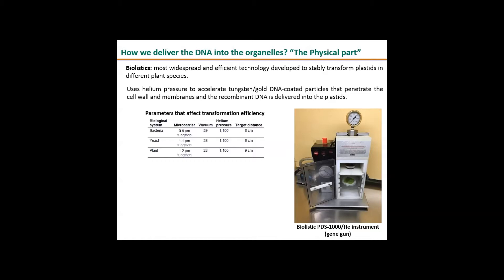In the picture there are different distances marked as A, B, and C. By changing those we can alter the efficiency. For what we do, the target distance, which is the distance between the stopping screen and the cell, is nine centimeters. The helium pressure we use in PSI is 1100, which can be altered by changing the rupture disks. By changing different rupture disks we can put higher or lower pressure. For the machine we're using, we're using those settings for plants. We're asking everyone that uses the machine not to change them because they're pretty optimized for what we do in tobacco.